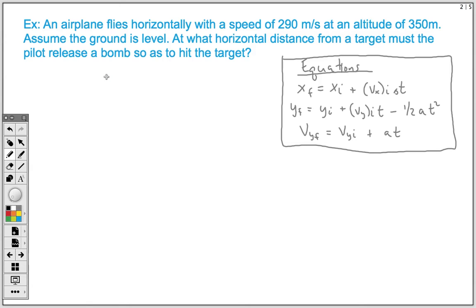All right, thanks for tuning into another physics video with Mr. M. In today's video I'm going to teach you guys how to solve a projectile motion type question. In this question we're only going to be looking at an object that is launched horizontally, so no vertical component whatsoever. Okay, so let's get into things.